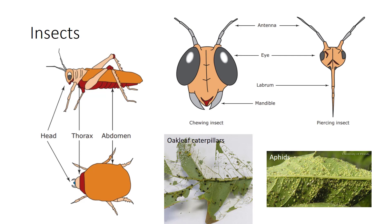Piercing-sucking insects pierce the leaves and suck out the juices. Examples are aphids, leafhoppers, scales, mealybugs, thrips, and mosquitoes.